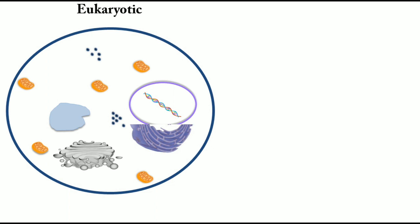Vacuoles are very essential in eukaryotes because they have several functions: storing waste products, food particles, and gases. Whatever is stored, the cell can use it when needed. Peroxisomes are specialized organelles that remove harmful radicals produced as byproducts of ongoing cellular reactions. These radicals can mutate DNA, so peroxisomes carry out their removal.